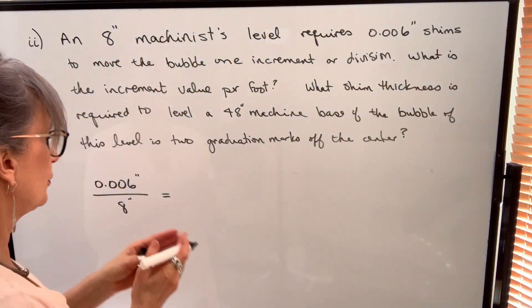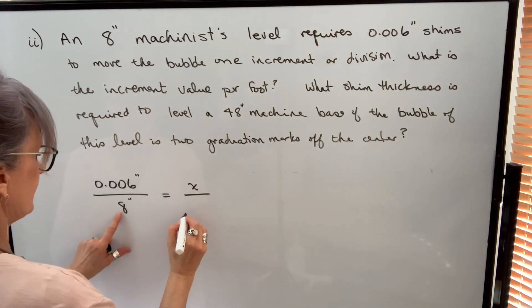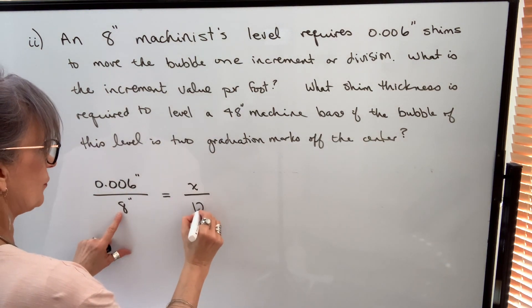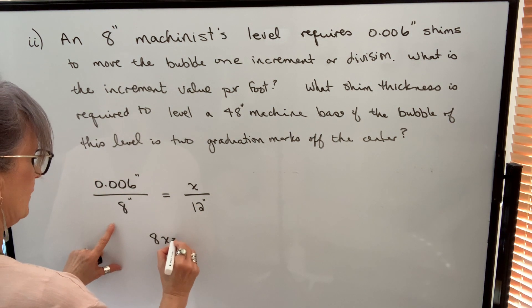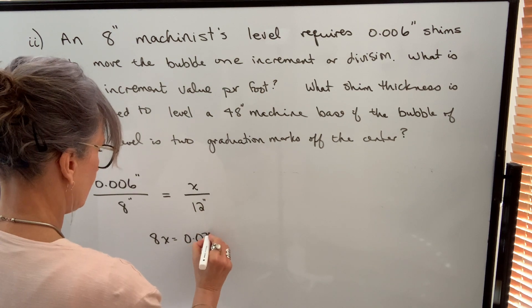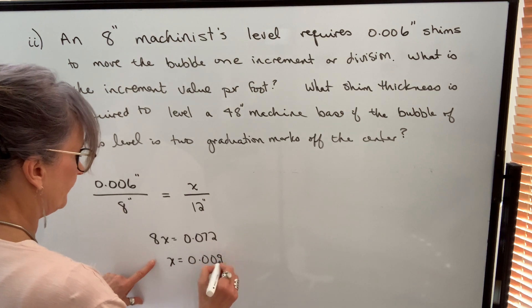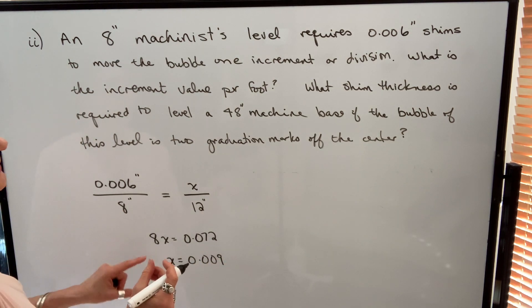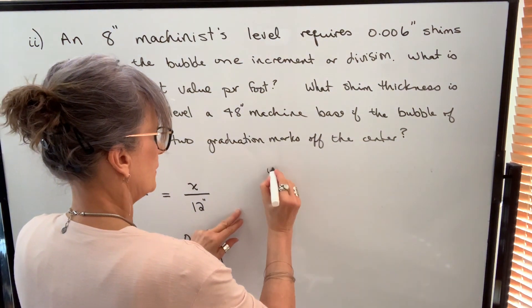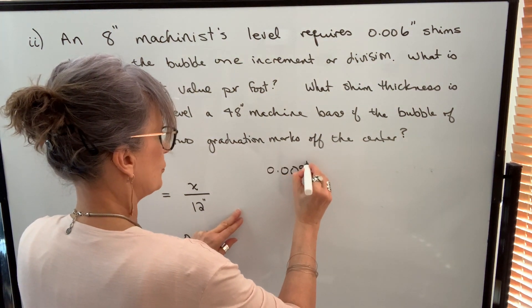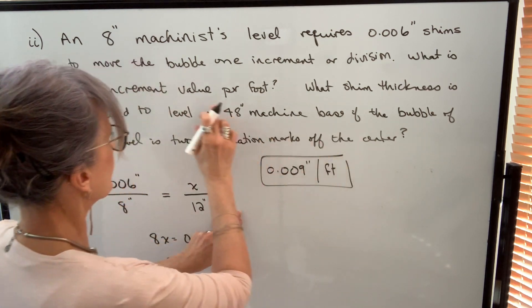So if six thousandths of an inch over eight inches causes that bubble to move one increment, then we want to know what that represents per foot. So we want to know x over 12 inches. We cross multiply, and we get 8x will equal 0.072, divide both sides by 8, and we get 0.009. That tells us that each graduation mark represents 9 thousandths of an inch per foot. So that's the first answer.